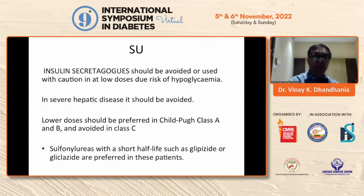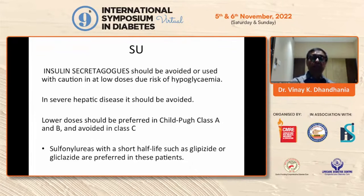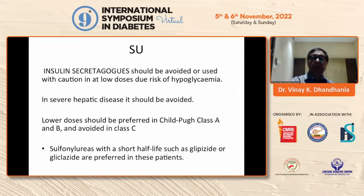Sulfonylurea, an insulin secretagogue, should be avoided or used with caution at low doses due to risk of hypoglycemia. As mentioned, they are usually bound to plasma proteins, and hypoproteinemia is very common in chronic liver disease. This drug should be avoided as far as possible. In severe hepatic disease, it should be completely avoided. Shorter-acting drugs like glipizide and gliclazide can be preferred in Child-Pugh class A and B and should definitely be avoided in class C.